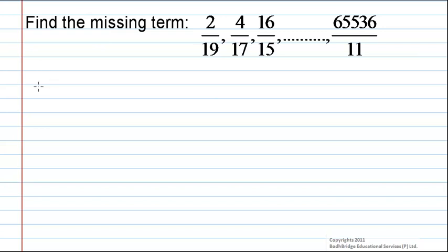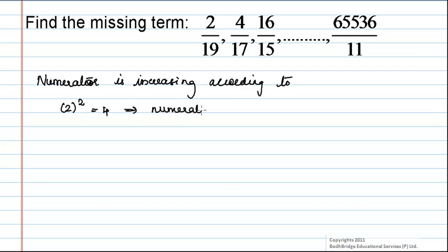we can say that numerator is increasing according to the below logic. That is, square of 2 is equal to 4 and it is the numerator of second term.